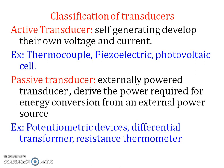Classification of transducers: they are broadly classified into active transducers, which are self-generating and develop their own voltage and current — examples include thermocouples, piezoelectrics, and photovoltaic sensors. Passive transducers are externally powered and derive the power required for energy conversion from an external power source — examples include potentiometric devices, differential transformers, and resistive thermometers.